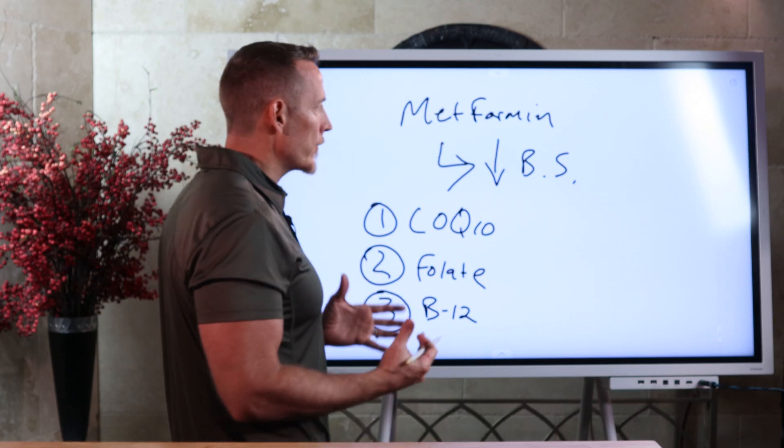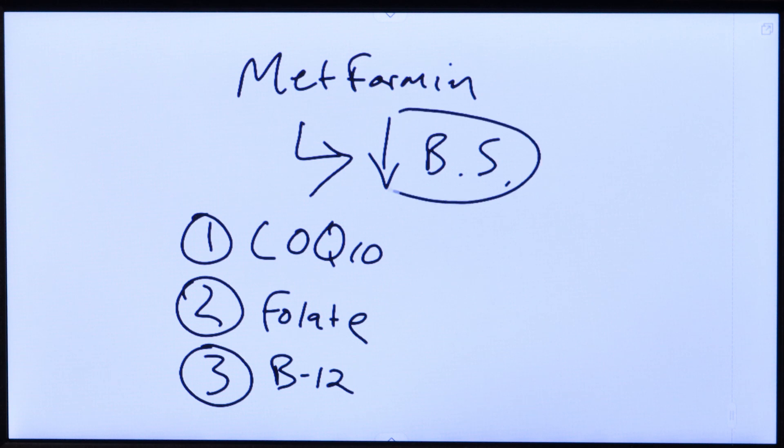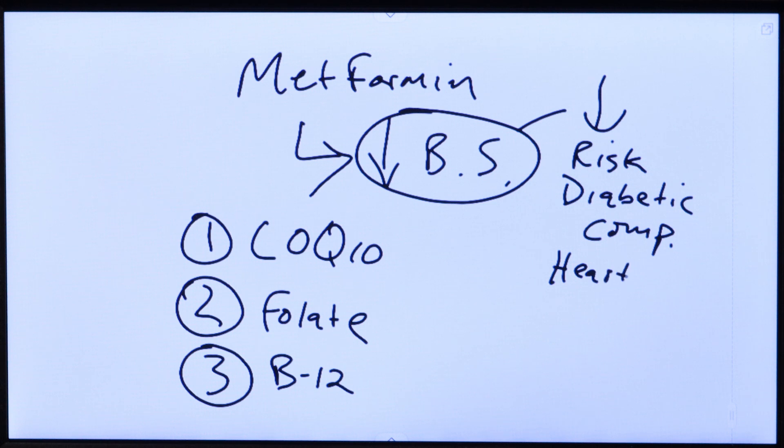The whole intention of using metformin to lower blood sugar is to reduce your risk of developing diabetic complications, but also to reduce your risk of heart disease, stroke, heart attack, etc. That's why doctors use it, because long-term use can reduce your risk by lowering your blood sugar. But long-term use also creates these three nutritional deficiencies.